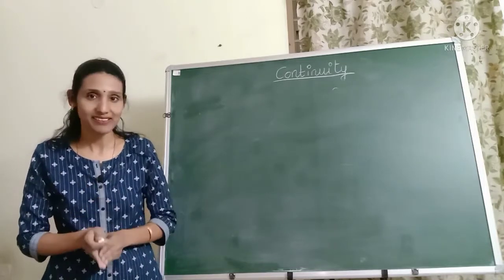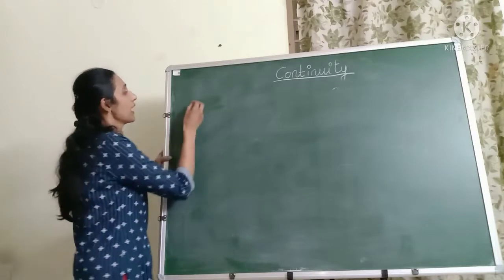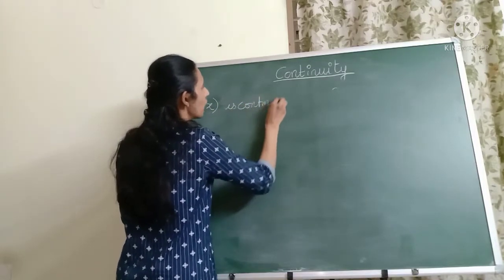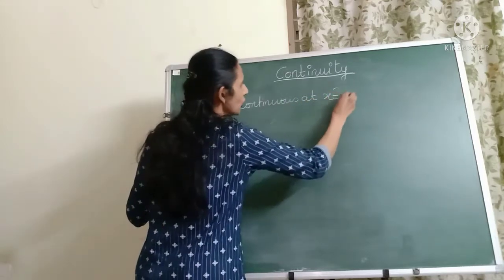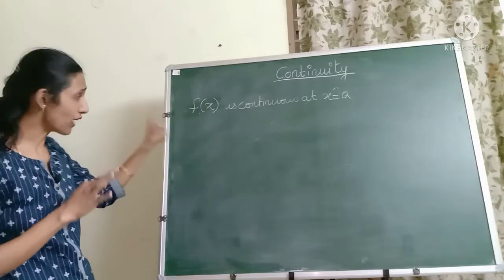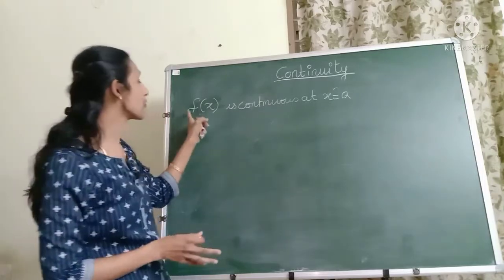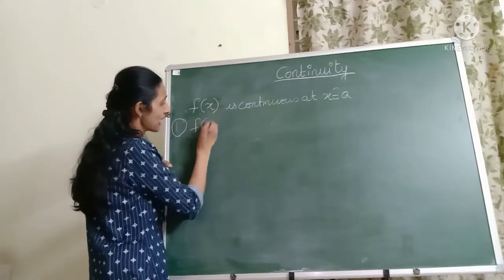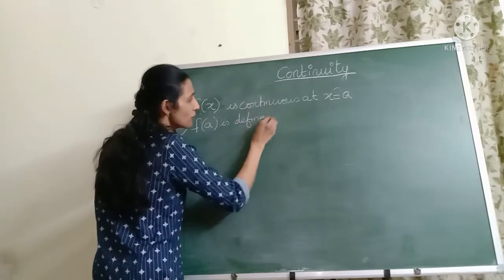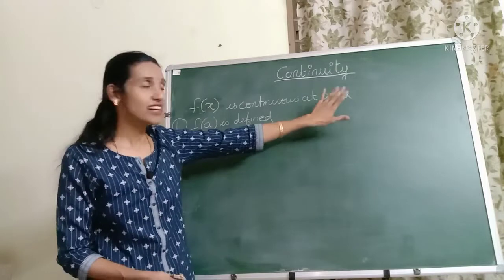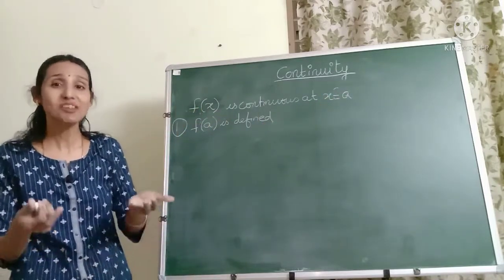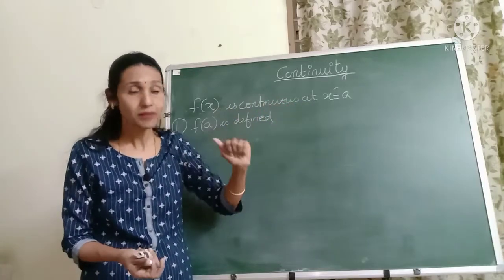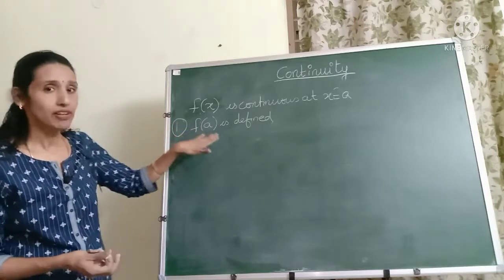There are three conditions which need to be satisfied for a function to be continuous. If f(x) is the function and you want to check if it is continuous at a point x = a — where x = a is defined on the domain — the first condition is that f(a) should be defined. This is very important. If at the point x = a, the function f(x) is itself not defined, you can straight away say that the function is not continuous at x = a.